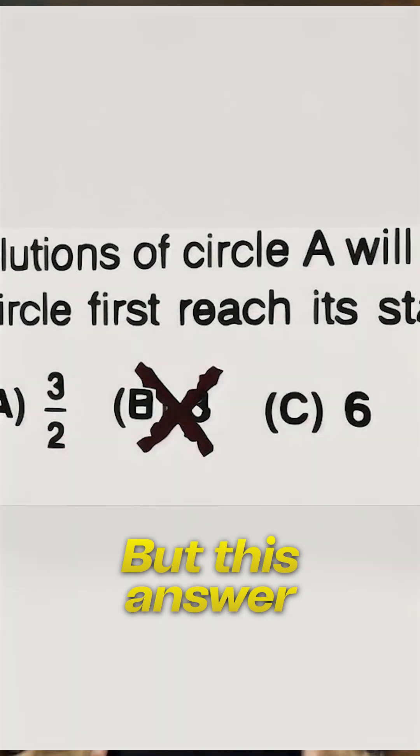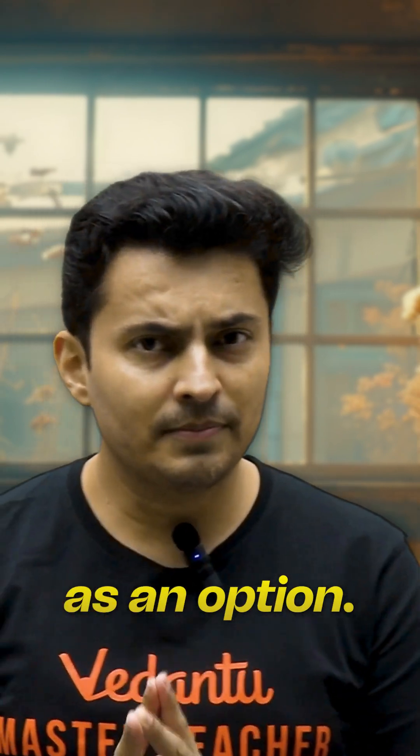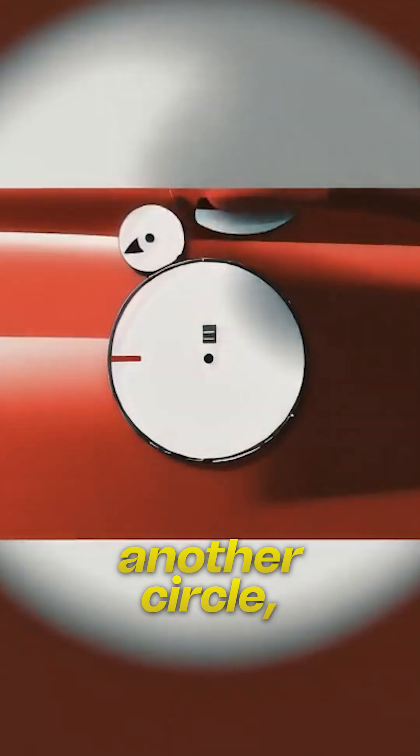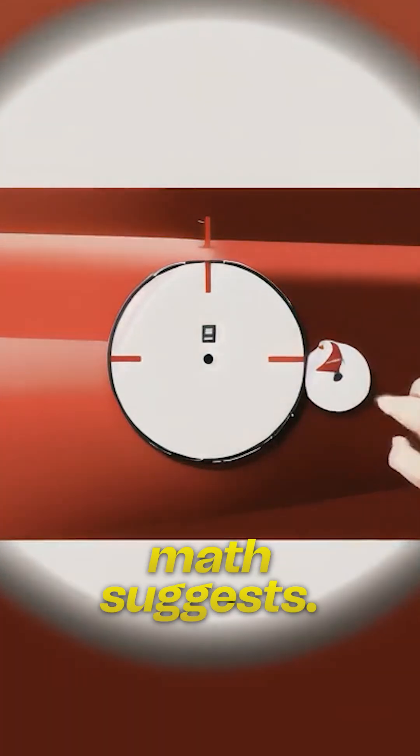But this answer is wrong and the correct answer wasn't even listed as an option. When a circle rolls around another circle, it makes one additional rotation beyond what basic math suggests.